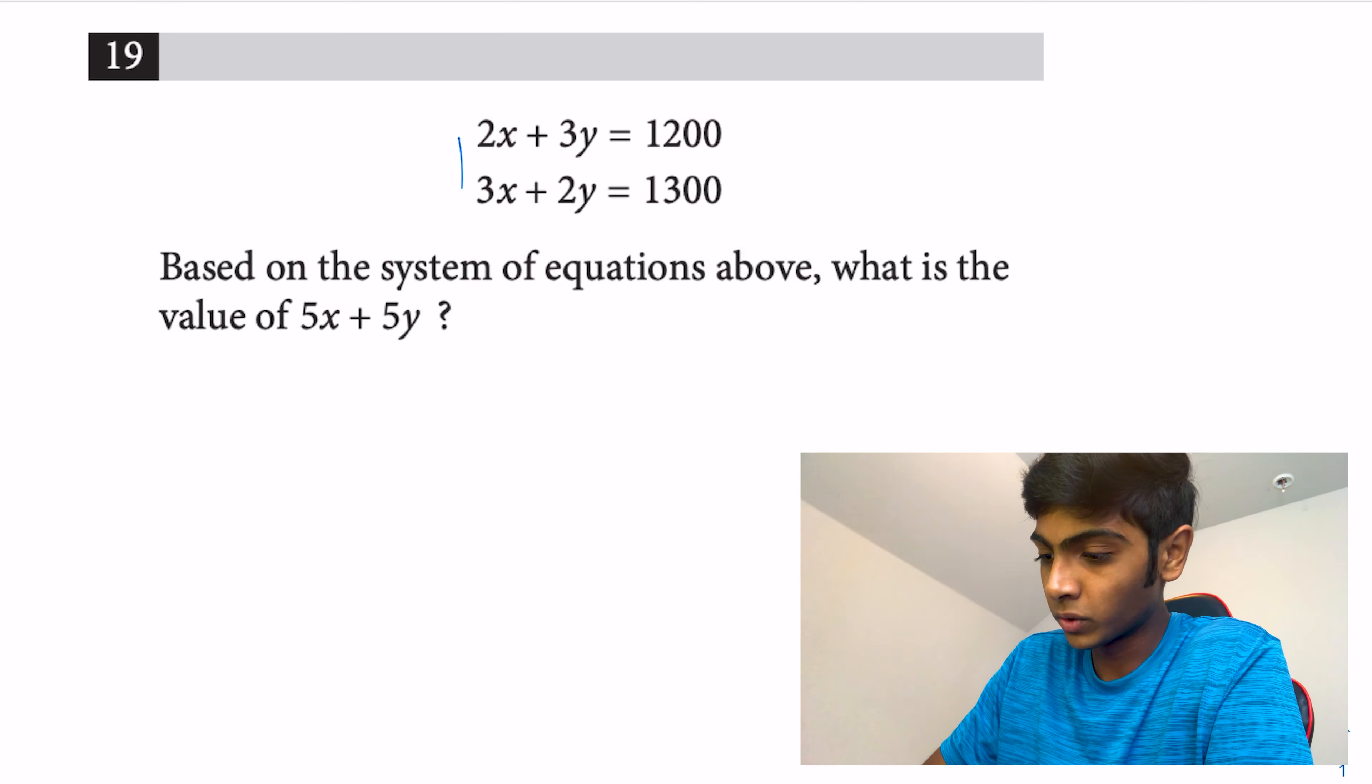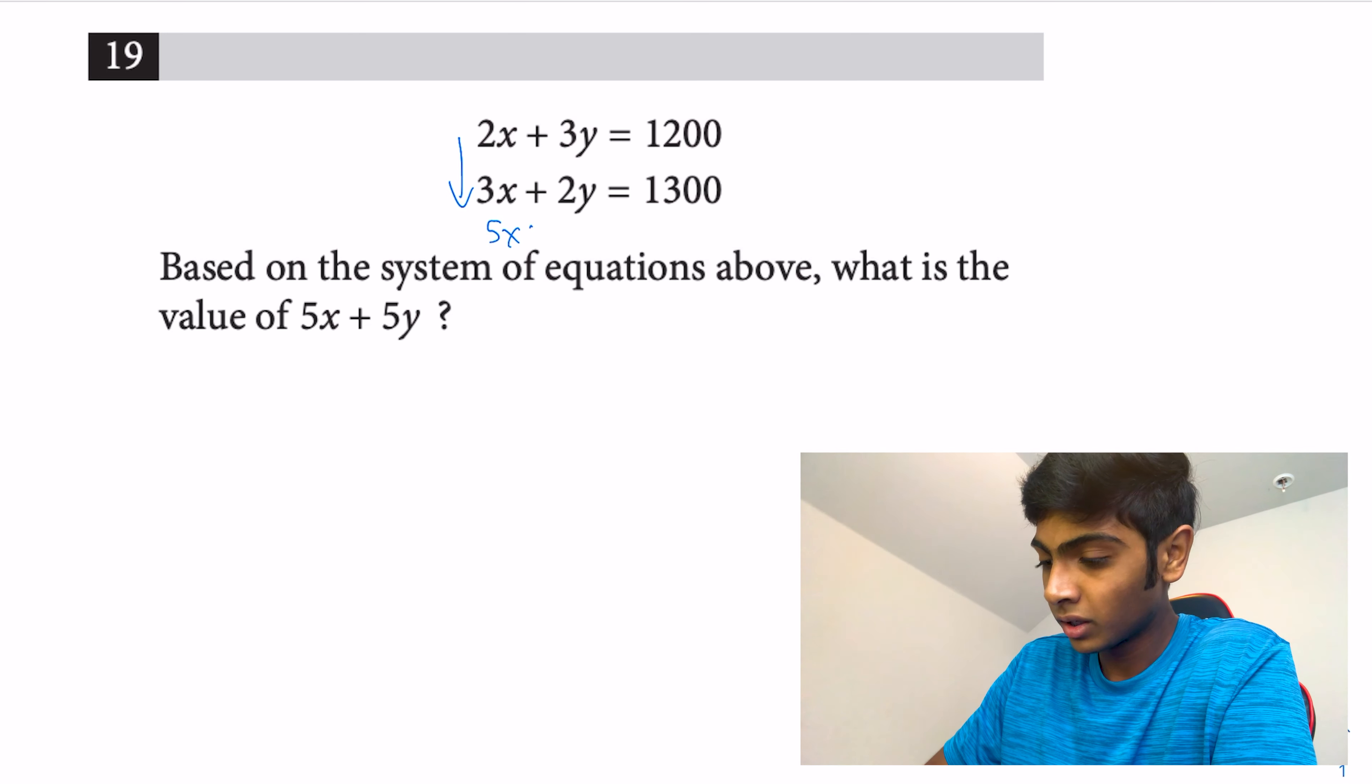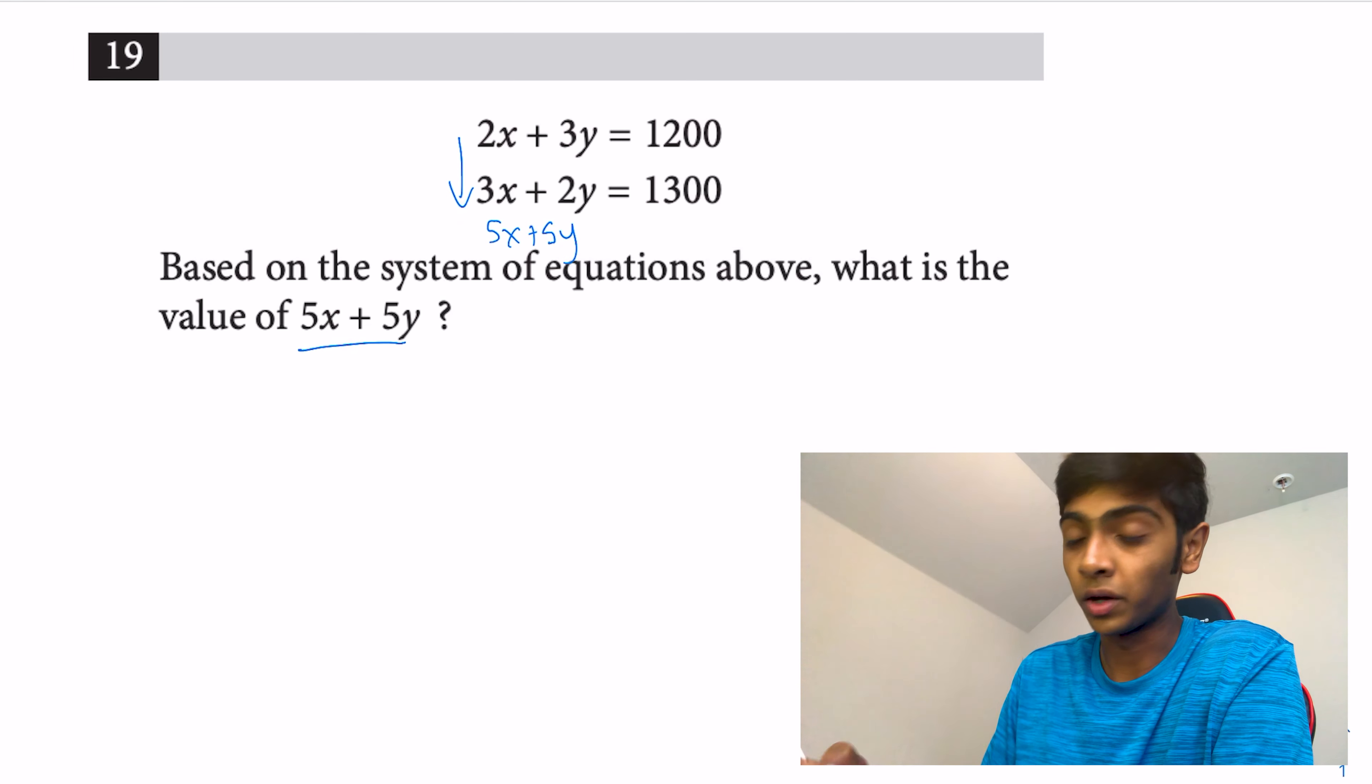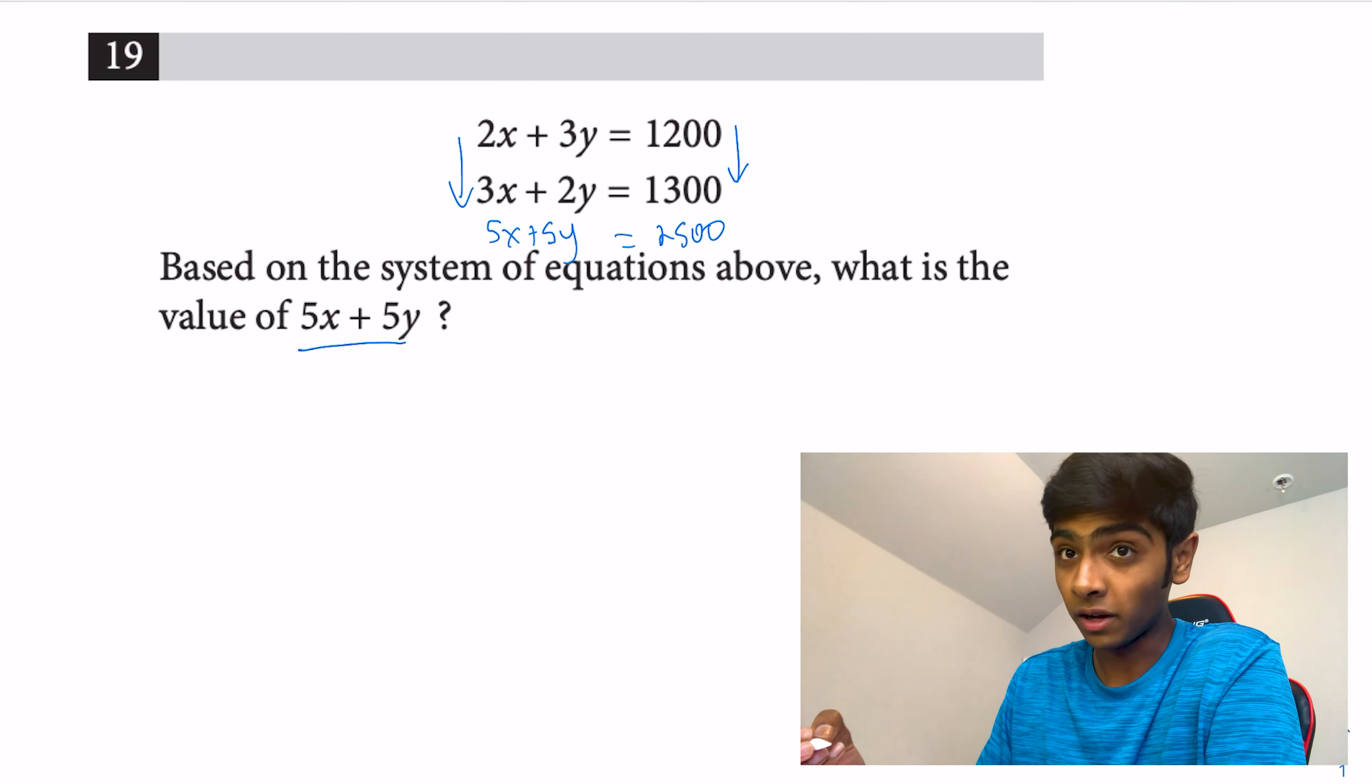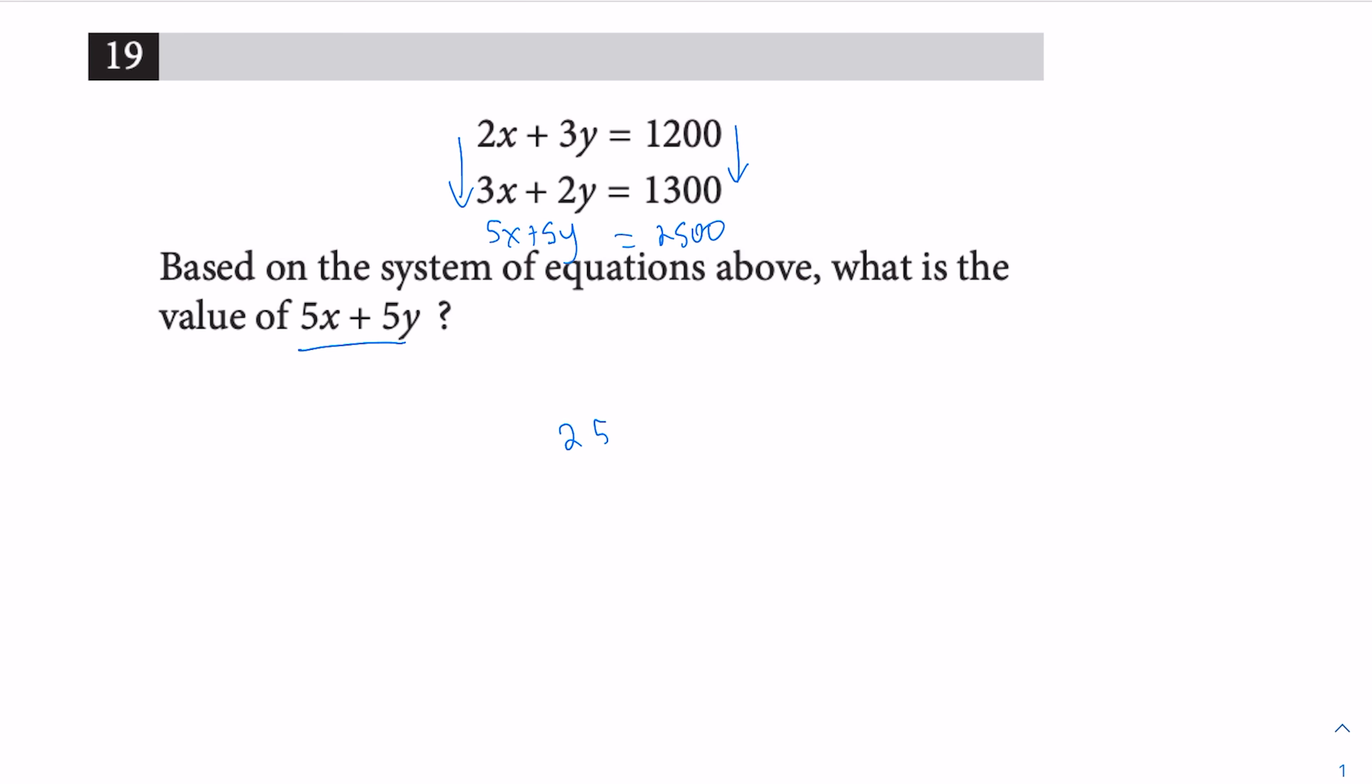When we add them going down, we get 5x + 5y, and that's what we have to solve for, so that worked out really well. Then we just add this part down and we get 2,500. So 5x + 5y is 2,500, and that's our answer.